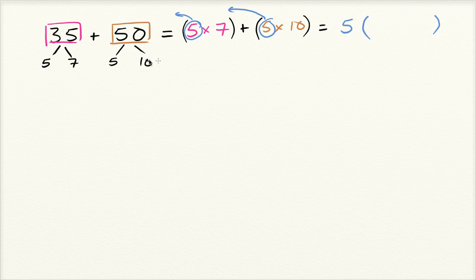So you do 35 divided by five, you're just left with the seven. So you're just left with the seven after you've factored out the five, and over here you're just left with the 10. So five times seven plus 10. And we're done. 35 plus 50 is equal to five times seven plus 10.